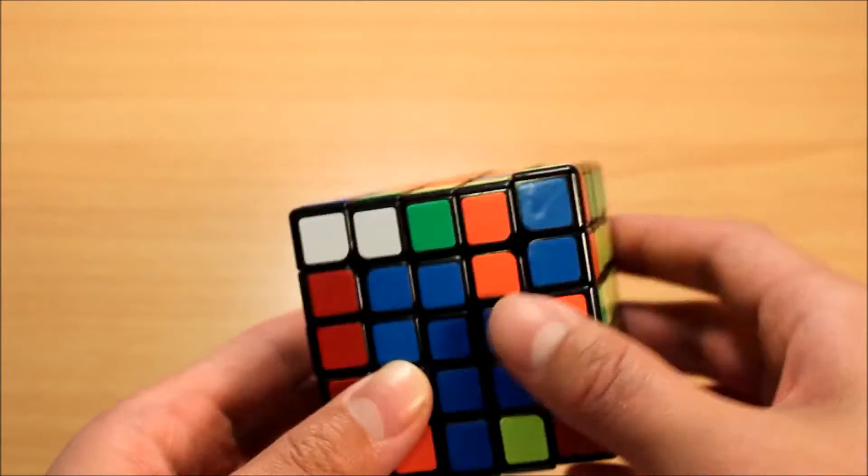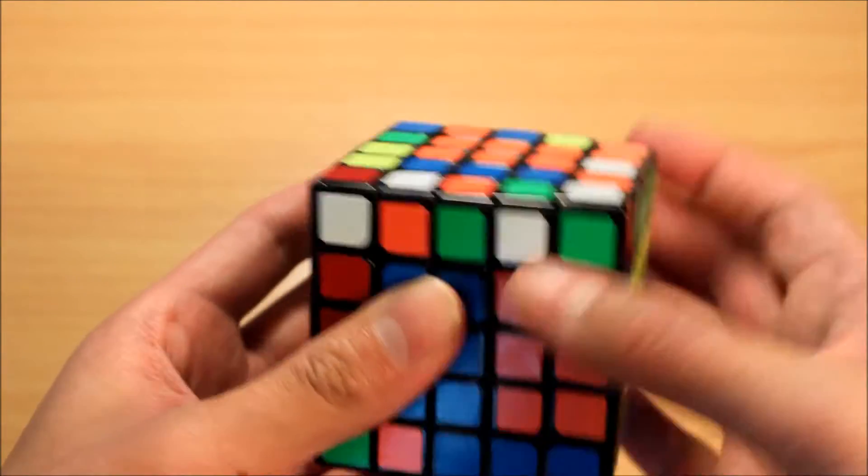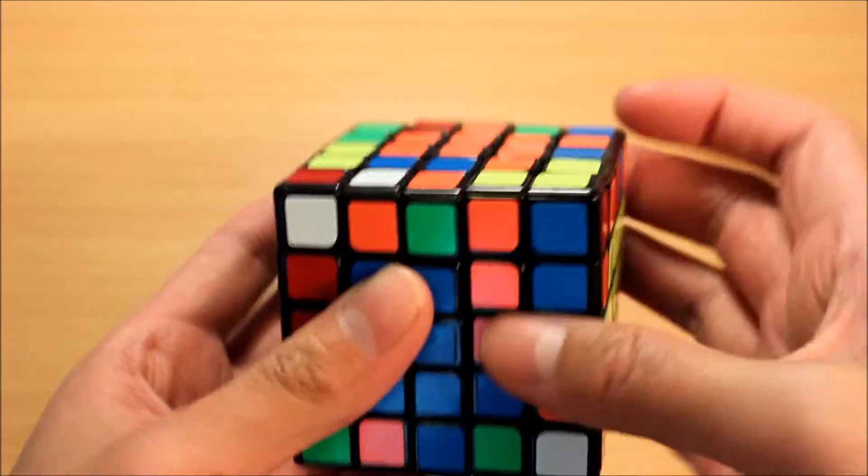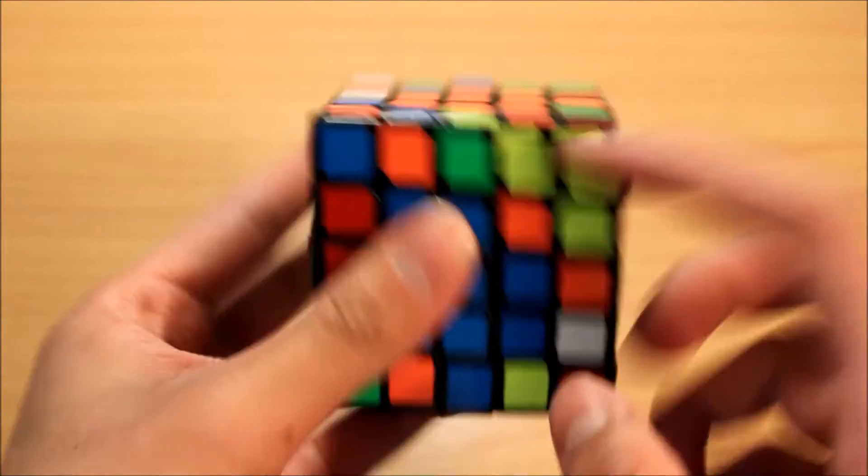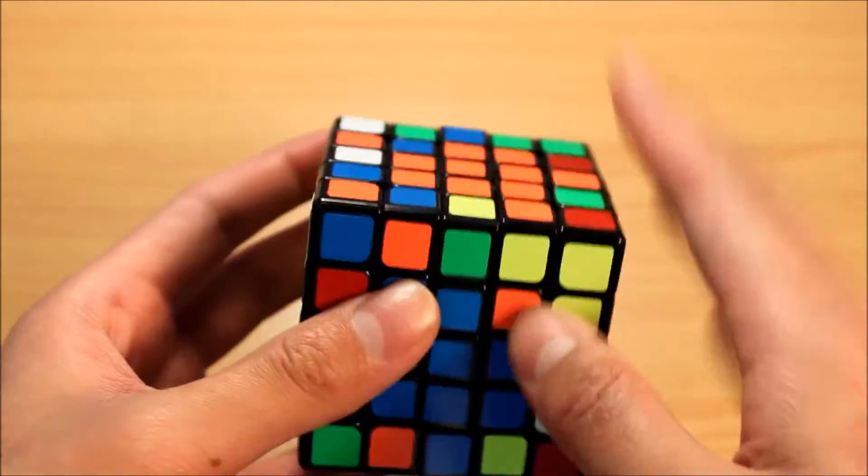We got these two corners here. If they're in this position, just do a soon, and that's solved. Really simple. When they're like this, do an anti-soon.